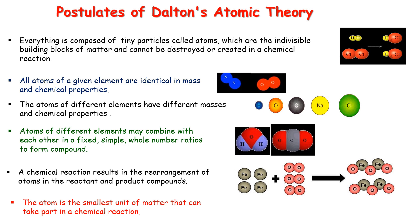First, he said that matter is made up of very tiny particles called atoms, which are the indivisible building blocks of matter and cannot be destroyed or created in a chemical reaction. This means that if we keep dividing matter into smaller sections, we get atoms at the end. In a chemical reaction, atoms may combine together to form new units; however, no new atoms can be created and existing ones cannot be destroyed.